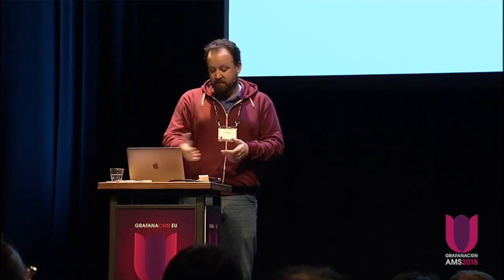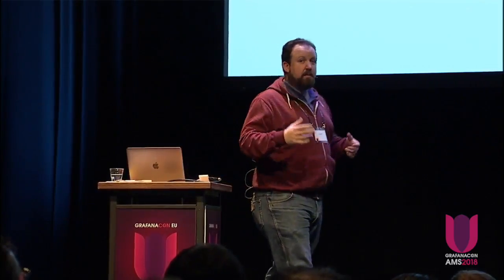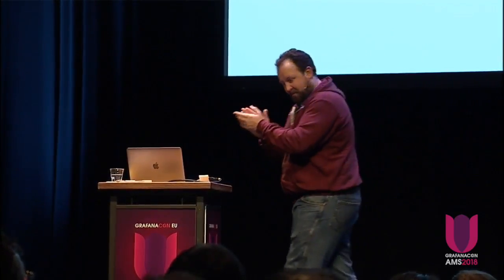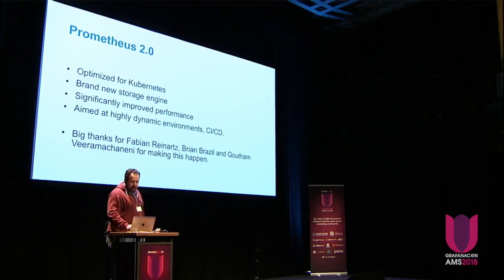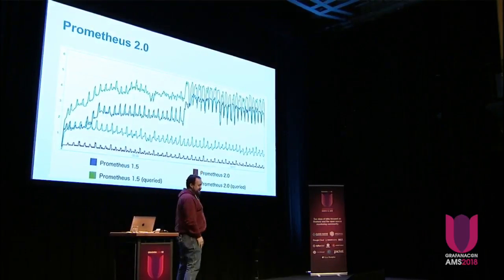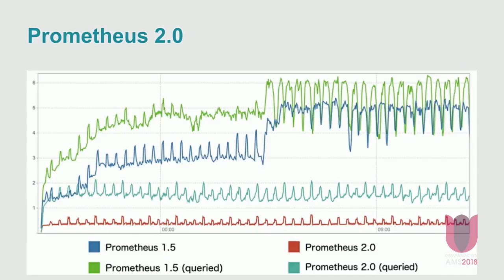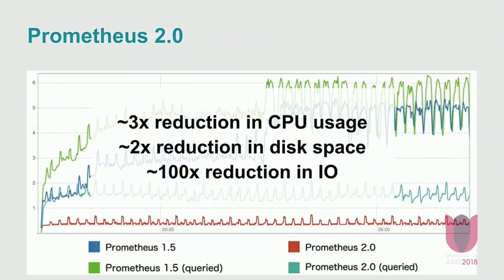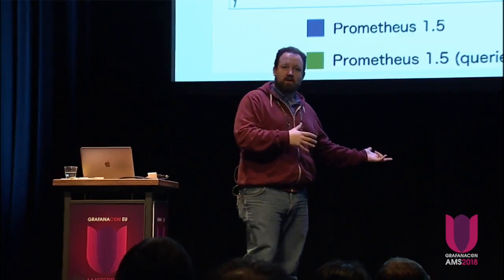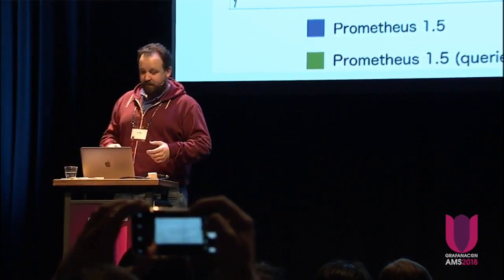Brand new storage engine, significantly improved performance. I just wanted to thank Fabian, Brian, and Gotham who did most of the work on Prometheus 2.0. The graphs look fantastic — the bottom ones are Prometheus 2.0 and the top ones are Prometheus 1.5, showing CPU load under a fixed workload. You can just tell it's massively lower. We see about a 3x reduction in CPU usage, 2x reduction in disk space because the compression got better and more efficient. But the real winner here is a 100x reduction in I/O, which comes from getting rid of the checkpoint process and using a write-ahead log for crash recovery. In a cloud-native environment, that makes a huge difference.